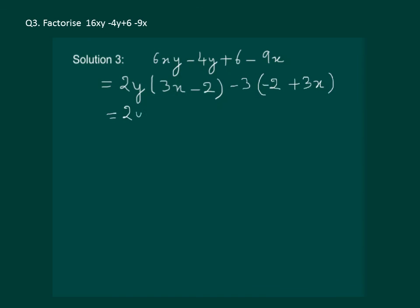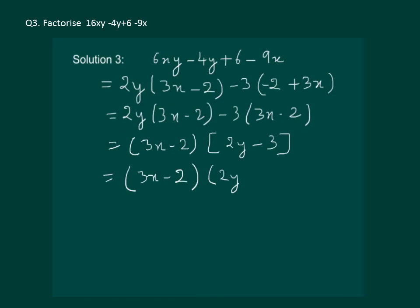So we have 2y into 3x minus 2 minus 3 into 3x minus 2. Now we have 3x minus 2 common in both these terms. So let us take out 3x minus 2 common and we are left with 2y minus 3. Hence, 3x minus 2 and 2y minus 3 are the factors of 6xy minus 4y plus 6 minus 9x.